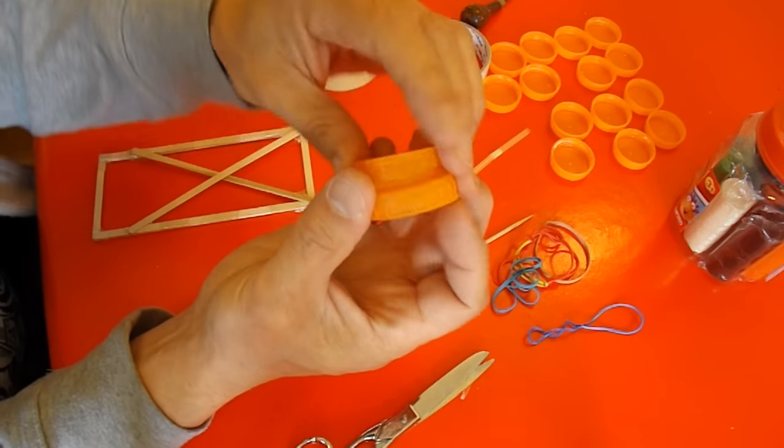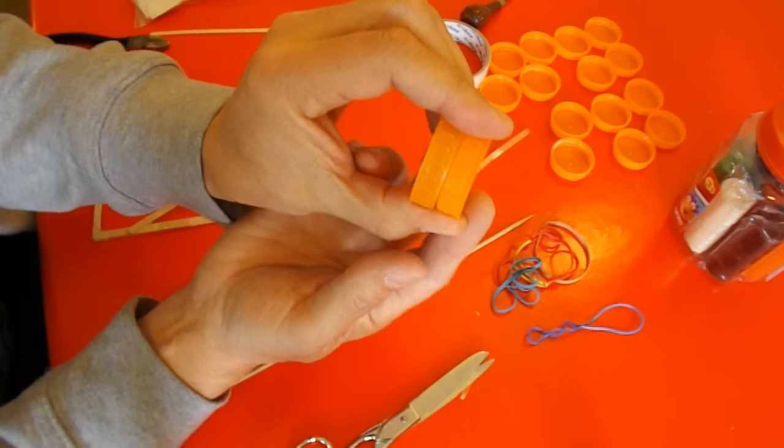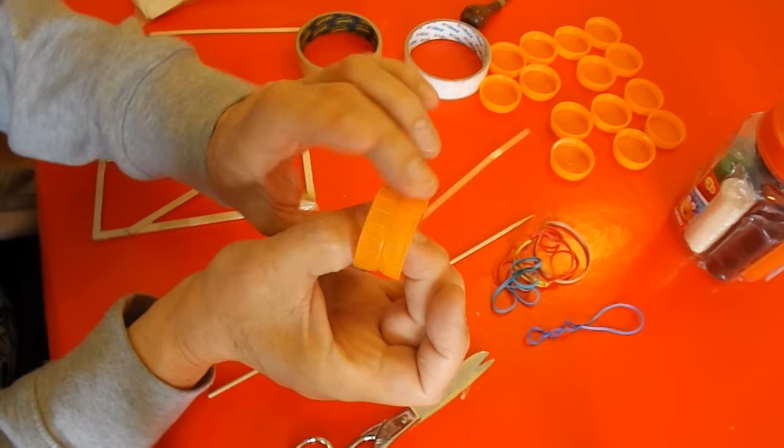And with these I'm going to use two bottle tops and tape them back to back like that, so I've got wider wheels.